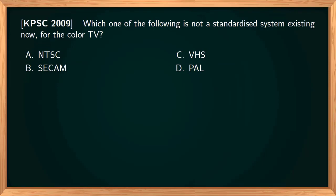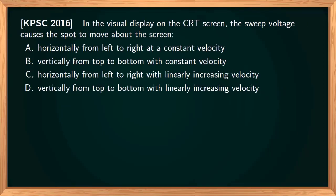One of the following is not a standardized color TV system: NTSC, SECAM, and PAL are all standardized systems, but VHS — which stands for Video Home System — is not a color TV standard. VHS is a consumer-level analog video recording format using magnetic tape recorders.